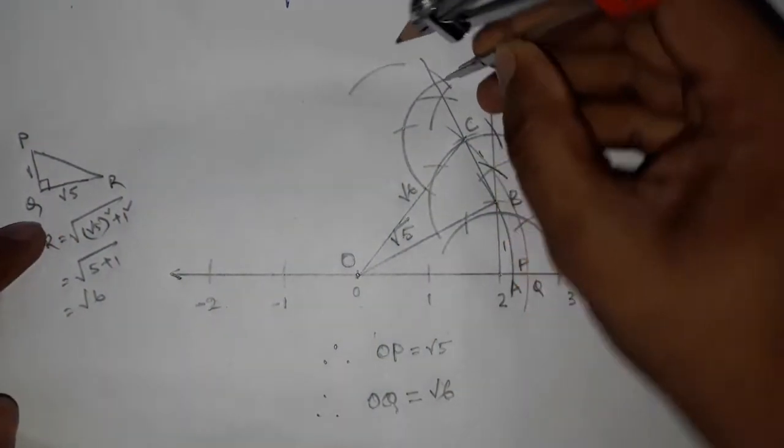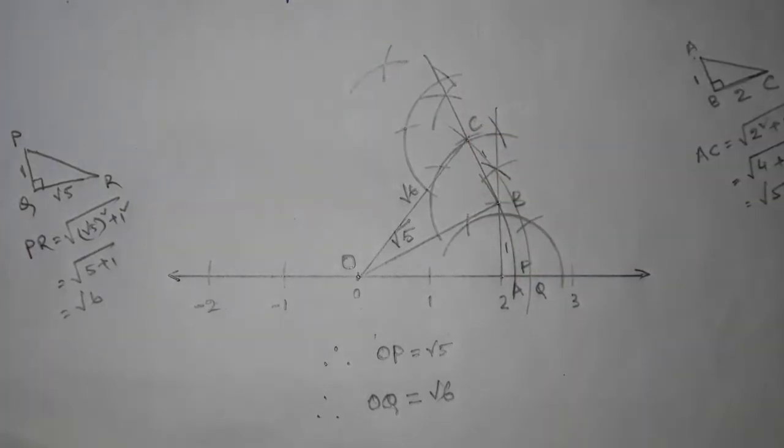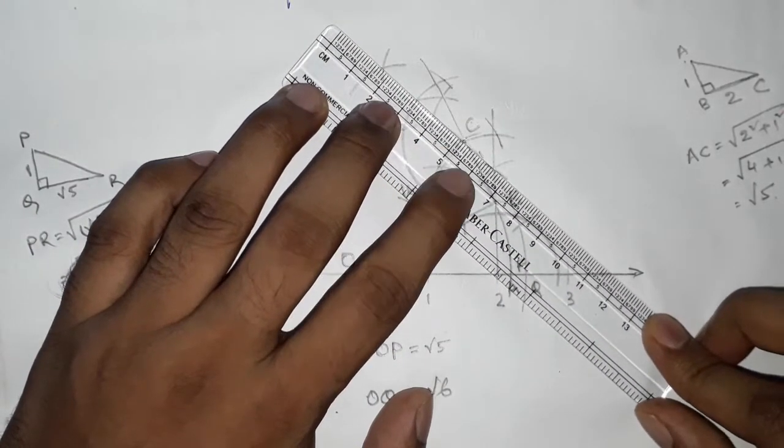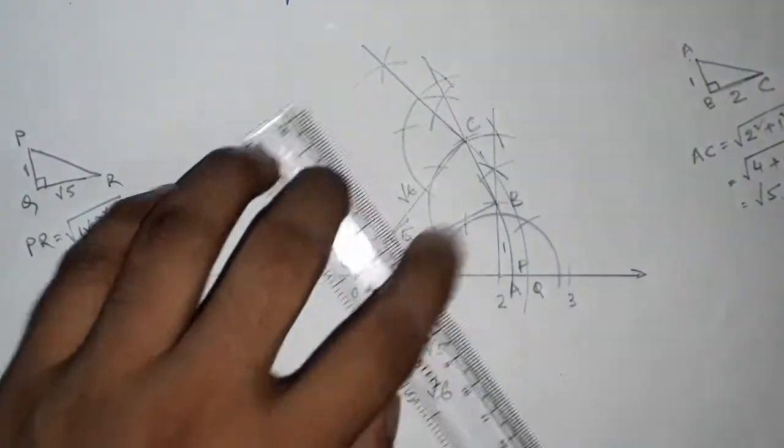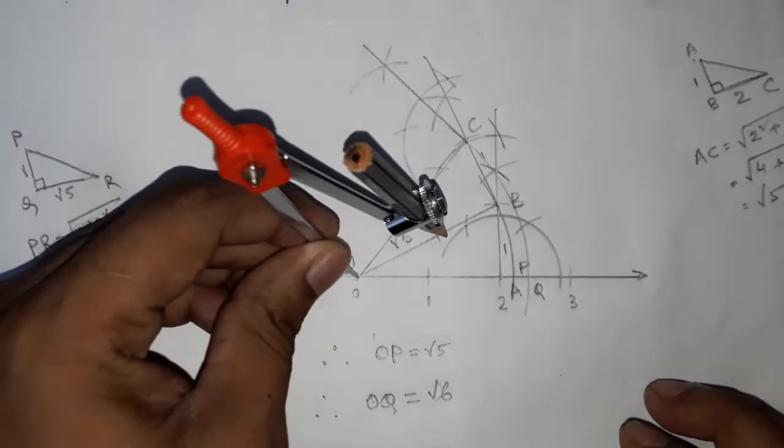Okay, so now I am drawing a 90 degree angle. So joining this to get the 90 degree angle. Okay, so we get the 90 degree angle.